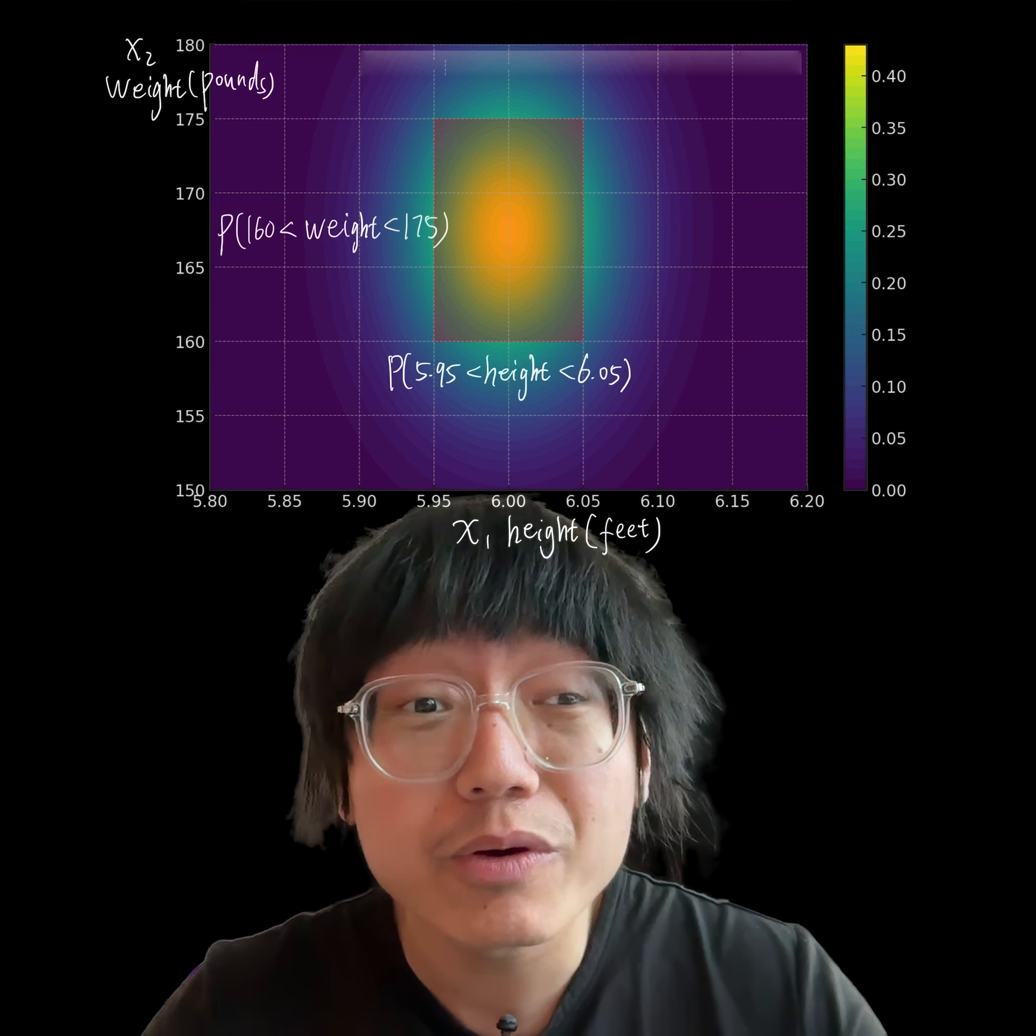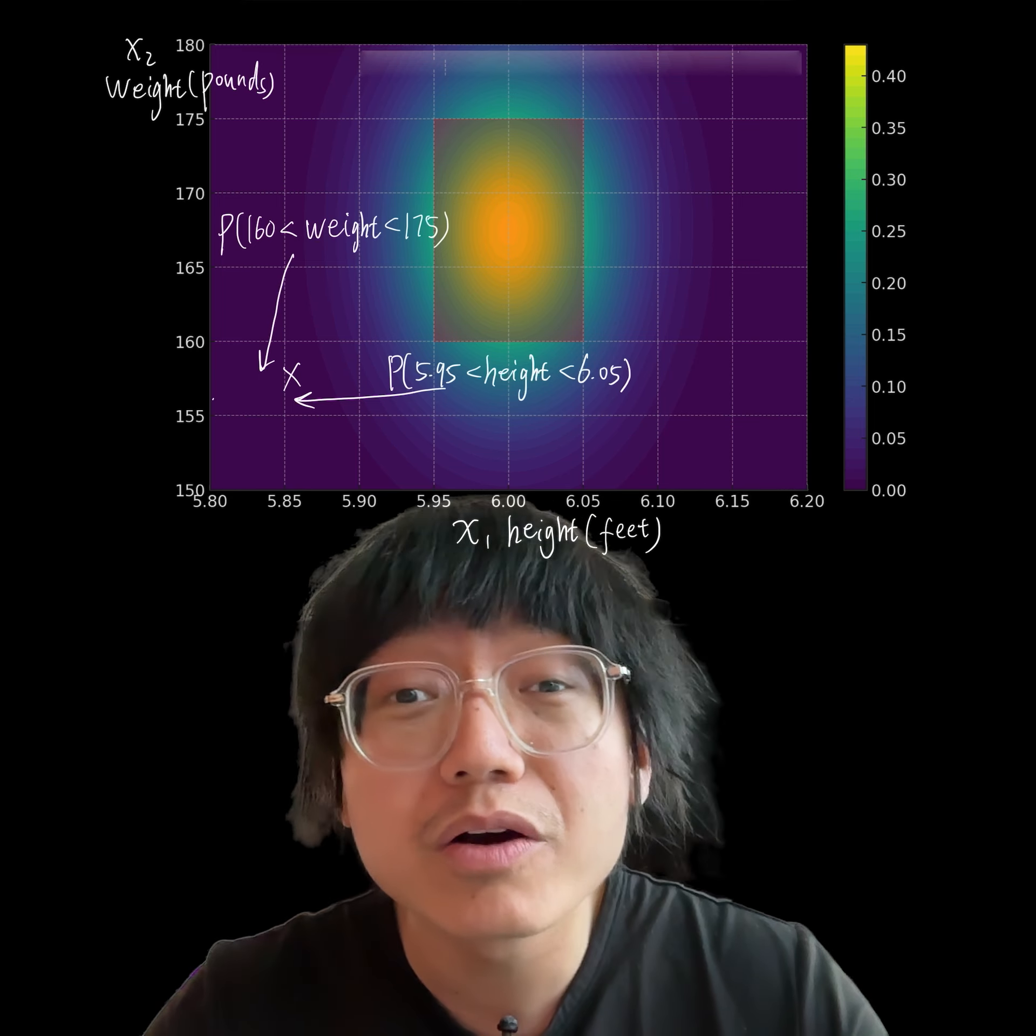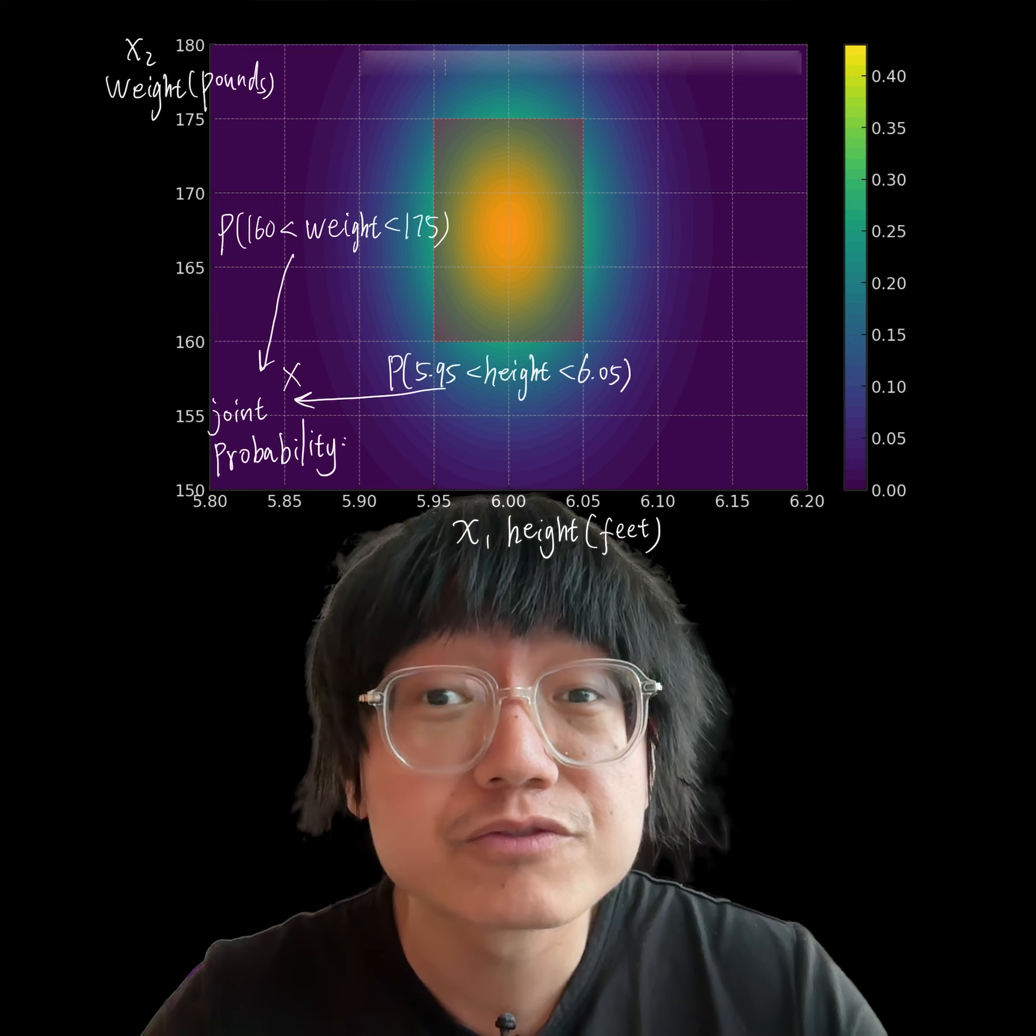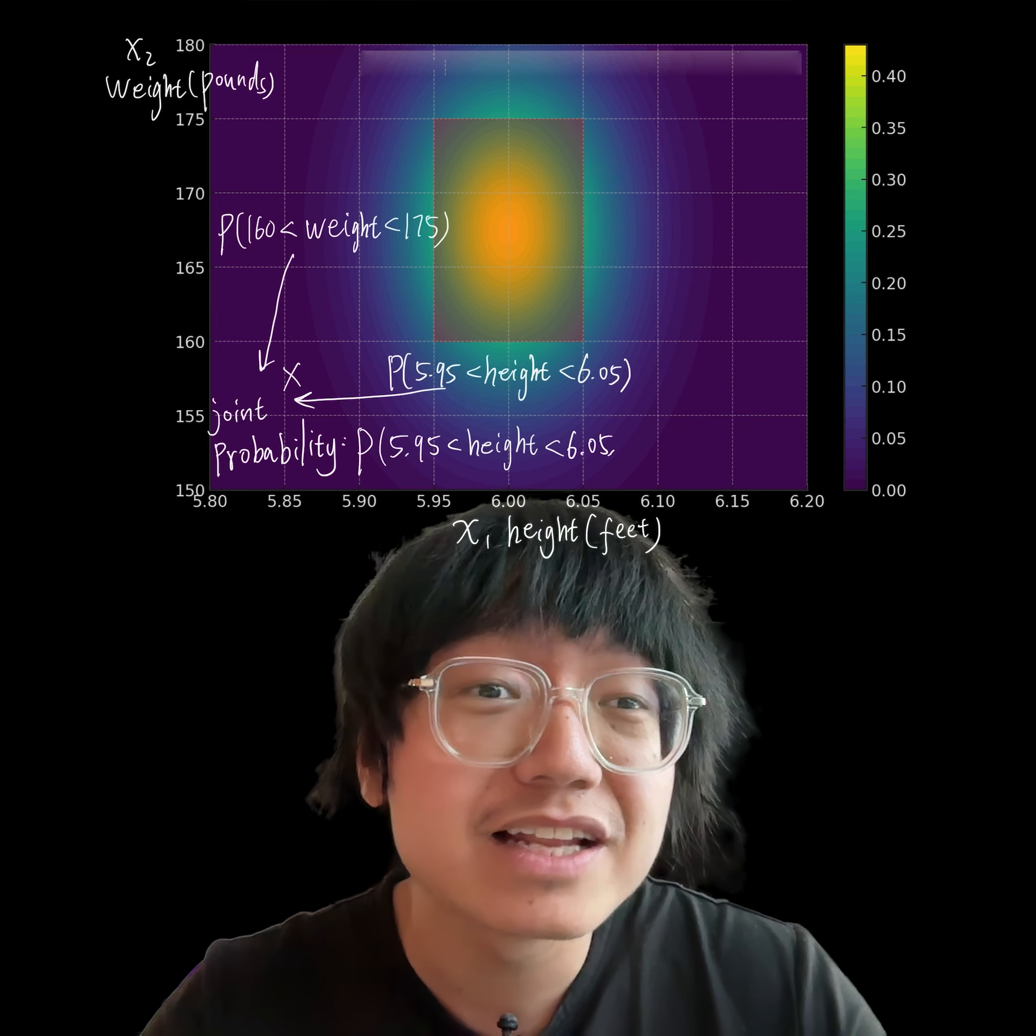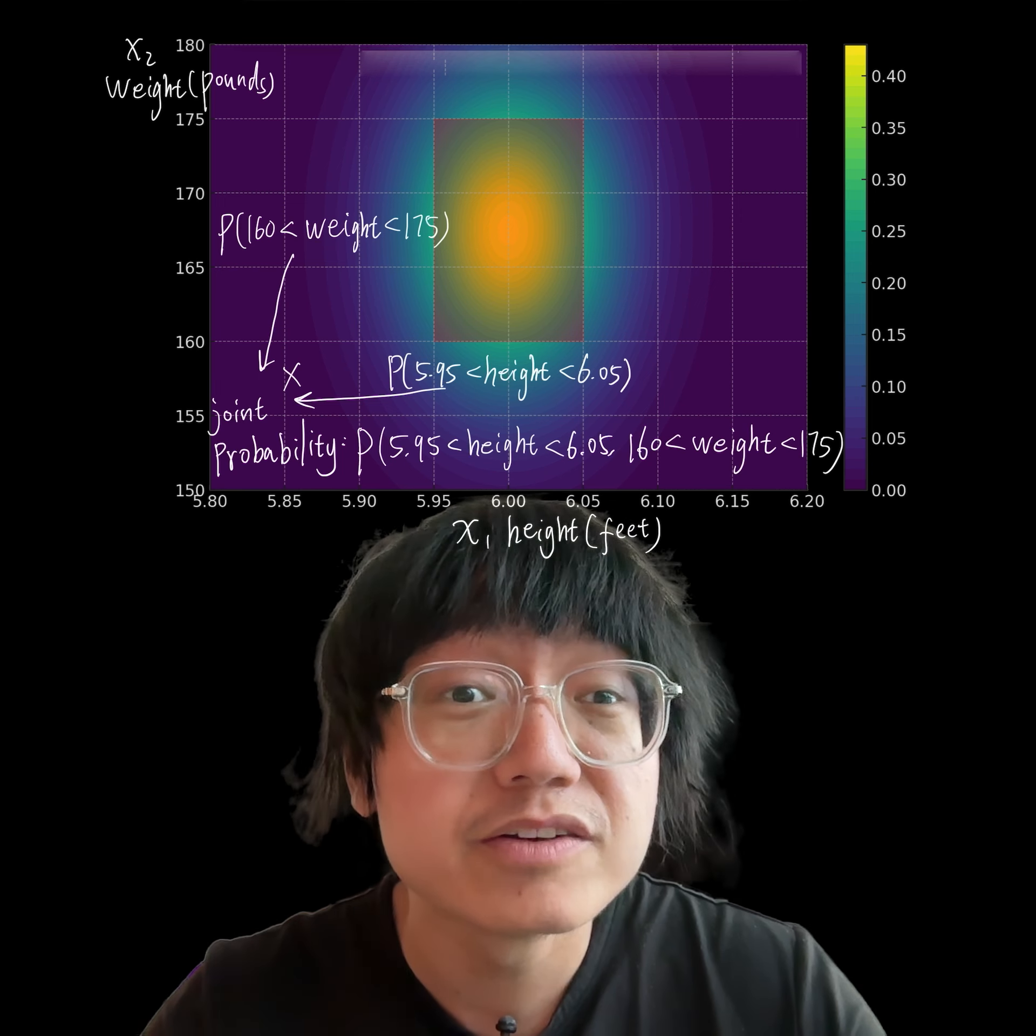This double integral effectively sums up all the infinitesimal probabilities across this area, which is defined by the interval from 5.95 to 6.05 for height and the interval from 160 to 175 for the weight.